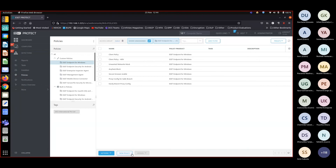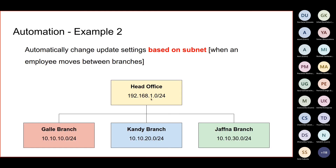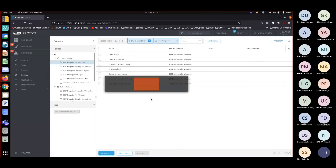Many organizations face this issue because they have to create separate installers due to proxy settings — separate installers for head office, Galle, Candy, and so on. But with this approach, we assign policies based on the subnet the device is in, so you can conduct installations using a single set of installation files rather than creating multiple installers with different IP addresses.